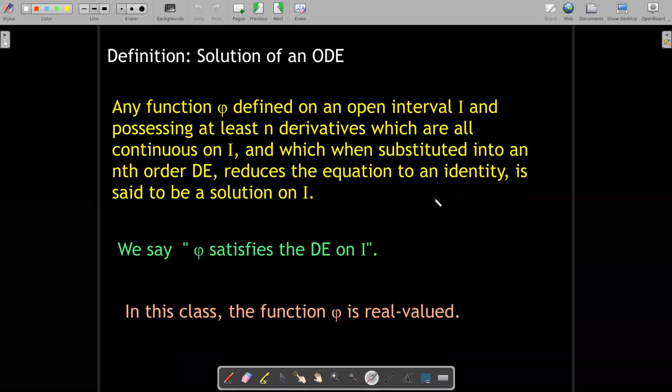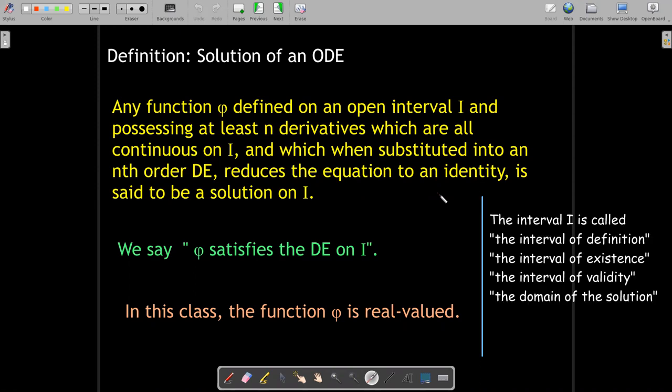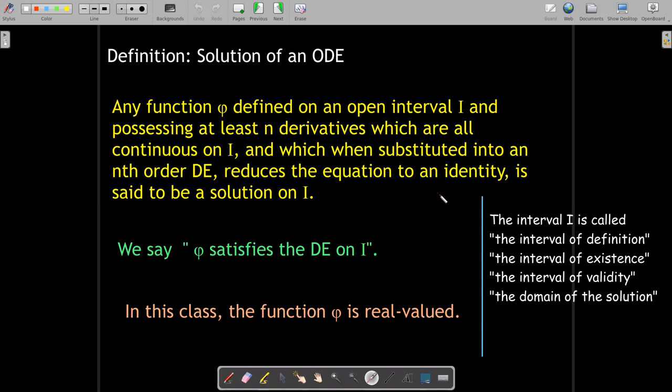We say that phi satisfies the differential equation on the interval i. Note that in this class, phi is going to be real valued. We'll see some situations where we may need to use some complex algebra or complex arithmetic, but in the end, we're always going to reduce phi to a real valued function. And finally, this interval i has many different names. It's called the interval of definition, interval of existence, interval of validity, or the domain of the solution. I like that one best, domain of the solution.